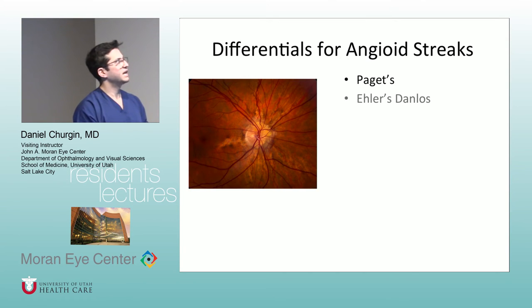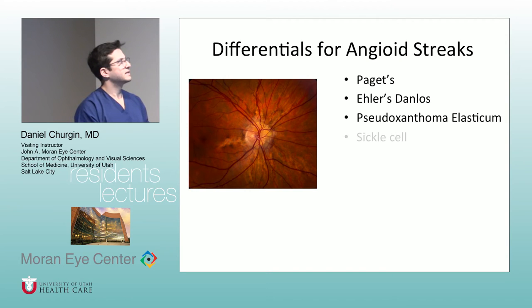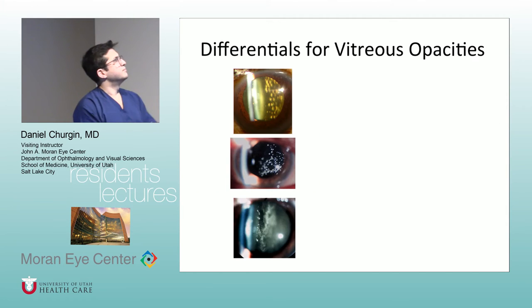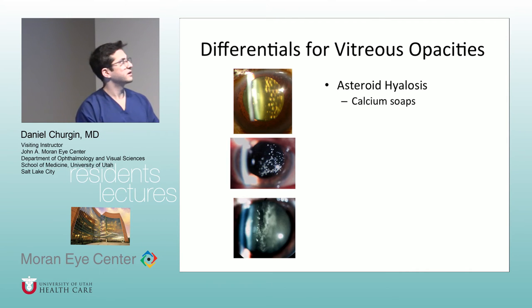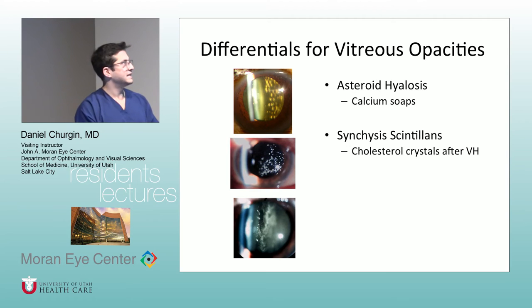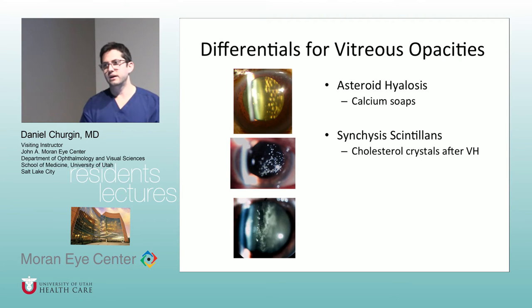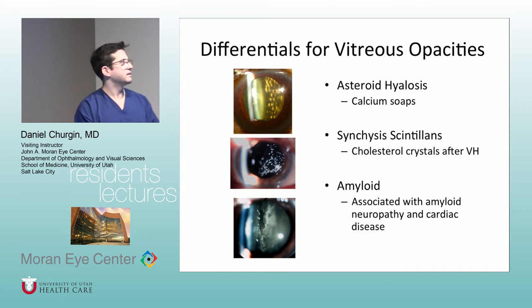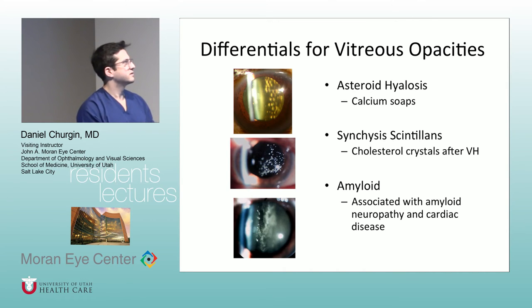Angioid streaks — the mnemonic PEPSI: Paget's, Ehlers-Danlos, Pseudoxanthoma elasticum, Sickle cell, Idiopathic. Differential for vitreous opacities: asteroid hyalosis — calcium soaps; synchysis scintillans — cholesterol crystals after vitreous hemorrhage (always hard to remember because you'd think it's hemoglobin-based, but it's actually cholesterol crystals); amyloid, associated with systemic disease; also include lymphoma and posterior uveitis.